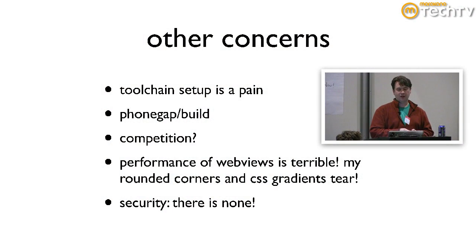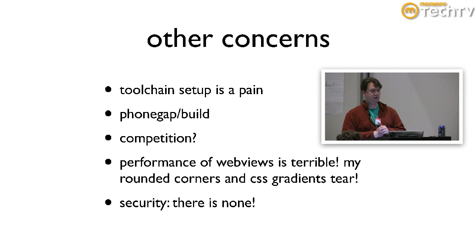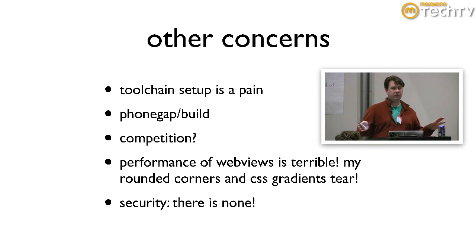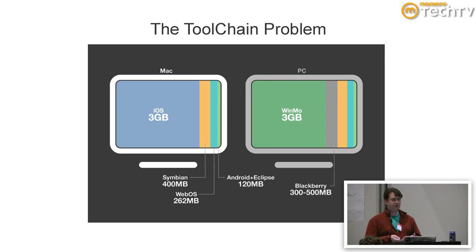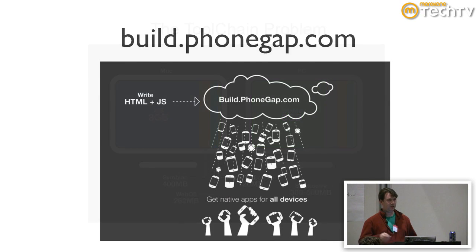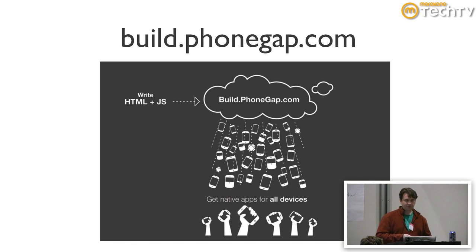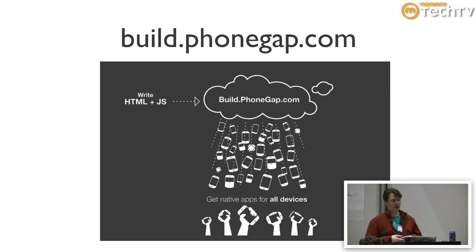Some other concerns we've had along the way — it hasn't always been easy and there are still some problems we're working on. One of the biggest is the tool chain itself. If you're developing for all the different devices out there, this essentially means that you have to install six gigabytes worth of SDKs and tools, and you have to do it on two separate operating systems. So what we decided to do was put PhoneGap in the cloud — because we love buzzwords. Shaz is going to be up next. He's going to demonstrate how you can use build.phonegap.com to build your apps — essentially you upload your code and it gives you apps. Thank you.